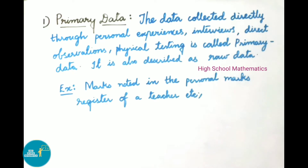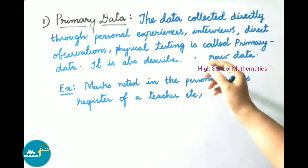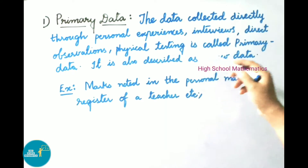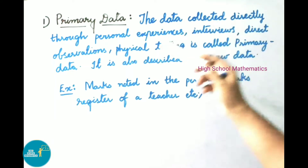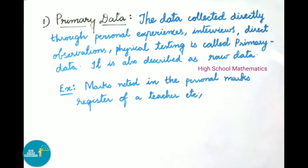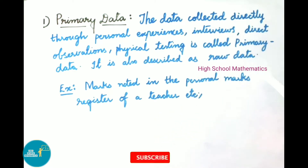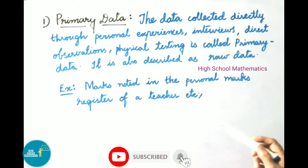First, primary data. The data collected directly through personal experiences, interviews, direct observations, physical testing, etc. is called primary data. It is also described as raw data. For example, marks noted in the personal marks register of a teacher — these are considered primary data.